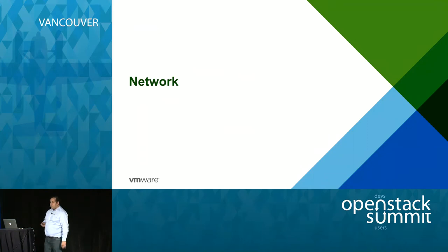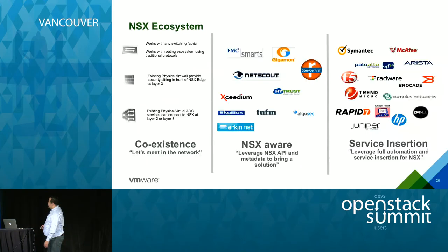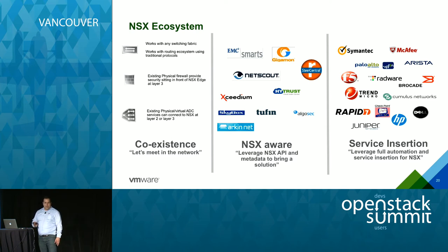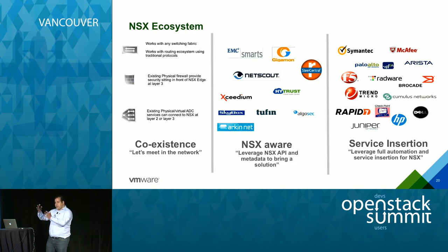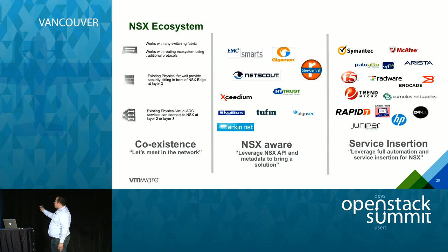On the network side, there's a very exciting story. NSX is our network virtualization platform, allowing a lot of capabilities in terms of security and network abstraction. One of the things we do is make sure that networking functionality is abstracted across the ecosystem — and we have three levels of integration with NSX.